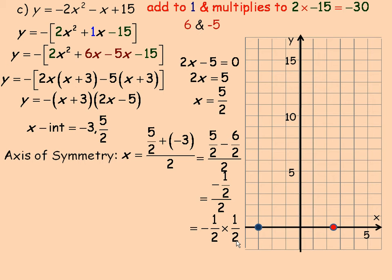And so multiplying these two rational numbers, negative 1 times 1 is negative 1, and 2 times 2 in the denominator is 4. So we get negative 1 quarter. So that's the axis of symmetry, x equals negative 1 quarter, and here's the line right here.